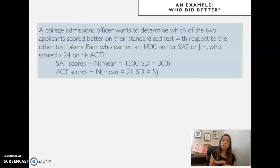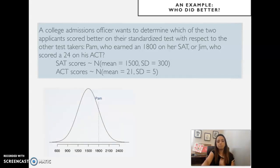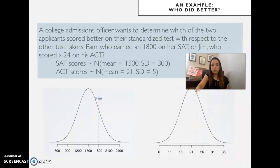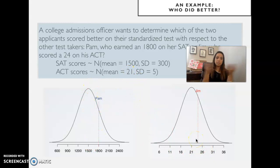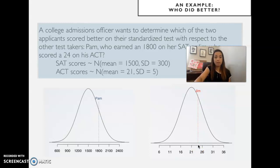Here is the normal distribution representing Pam's score. Now I'll bring in a different distribution — still normal — but centered at 21 instead of 1500, with a standard deviation of 5 instead of 300. Jim's score is 24. How do we compare those? That's the challenge.